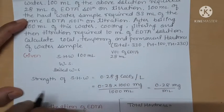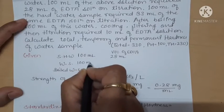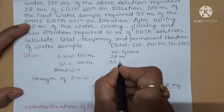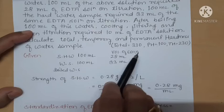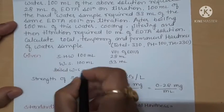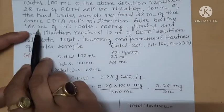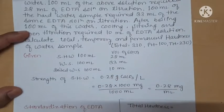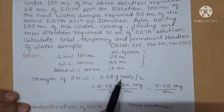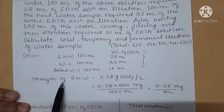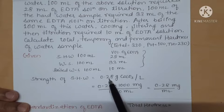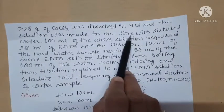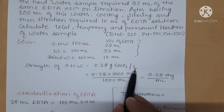The water sample is 100 ml, and when titrated with EDTA, the volume of EDTA required is 33 ml. For the boiled water sample, 100 ml required 10 ml of EDTA. The strength of the standard hard water is 0.28 g of CaCO3 per liter.